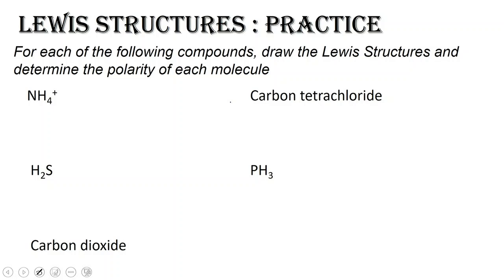So NH4+, hey wait, that's an ion. What is it doing as a Lewis structure? Well, polyatomic ions have covalent bonds. So polyatomic ions are covalently bonded atoms that have uneven charges. Polyatomic ions — their atoms are covalently bonded.